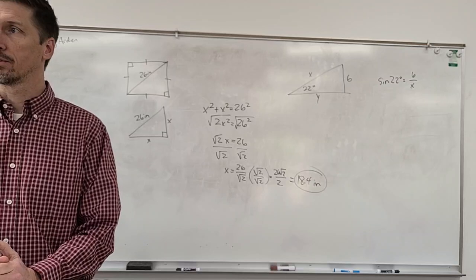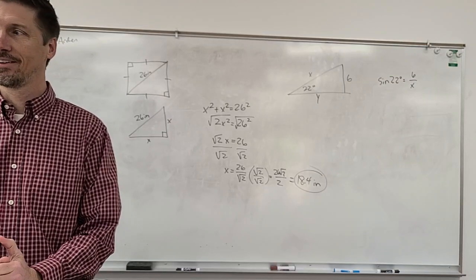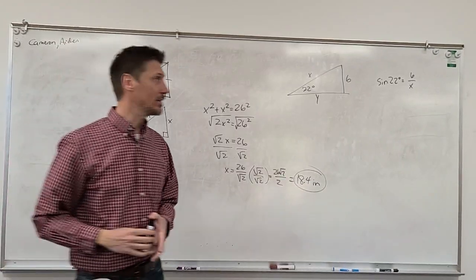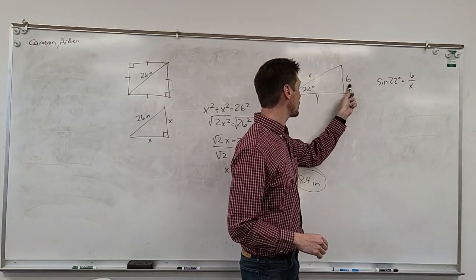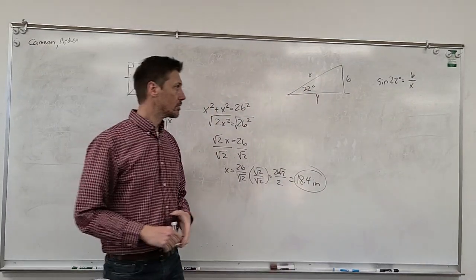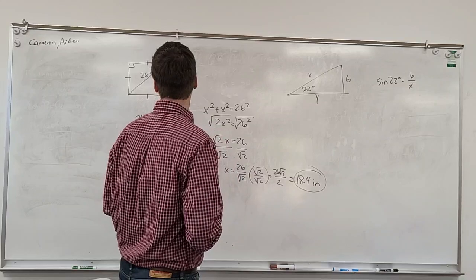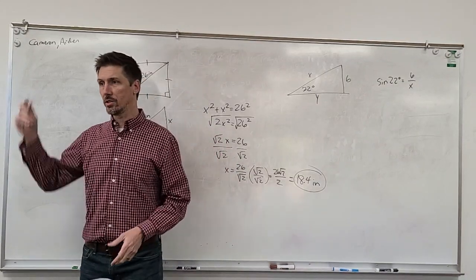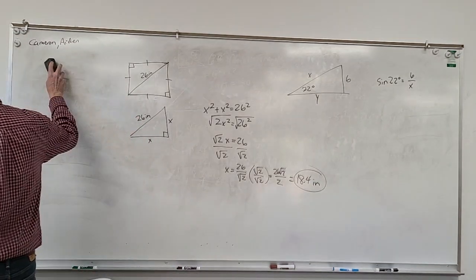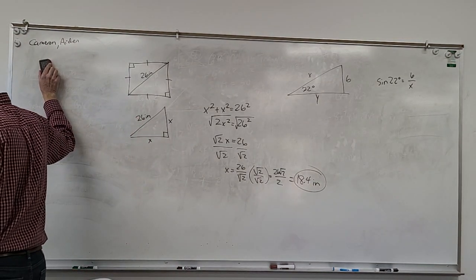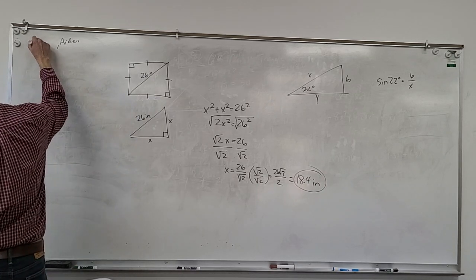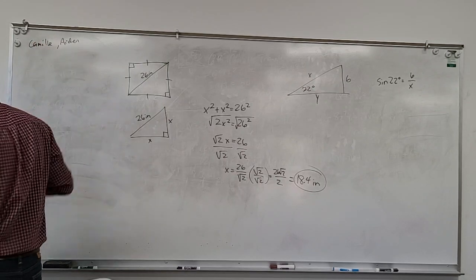It's because sine equals opposite over hypotenuse. So that's the value of the side that's opposite this angle divided by the length of the hypotenuse.